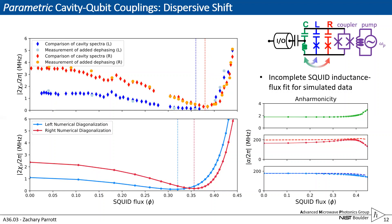We don't see perfect agreement to our experimental data for our simulation, and in flux space it's a little offset. This is largely due to not having the most streamlined method of fitting our data to our SQUID model.